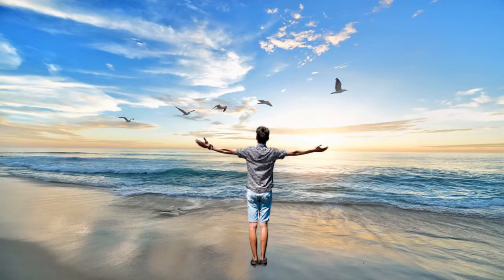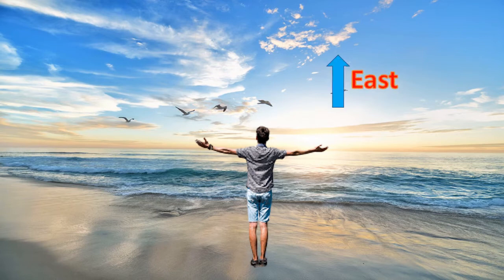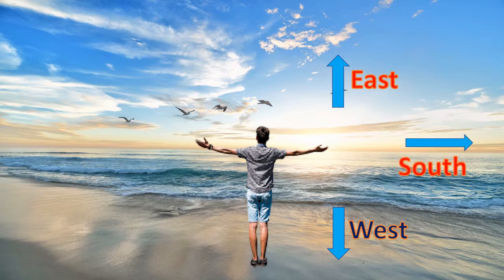Let us see how we can find directions. The Sun helps us find directions. If we face towards the Sun and spread our arms, facing the Sun will be our East direction, behind us will be West, on our right side will be South, and on our left side will be North.